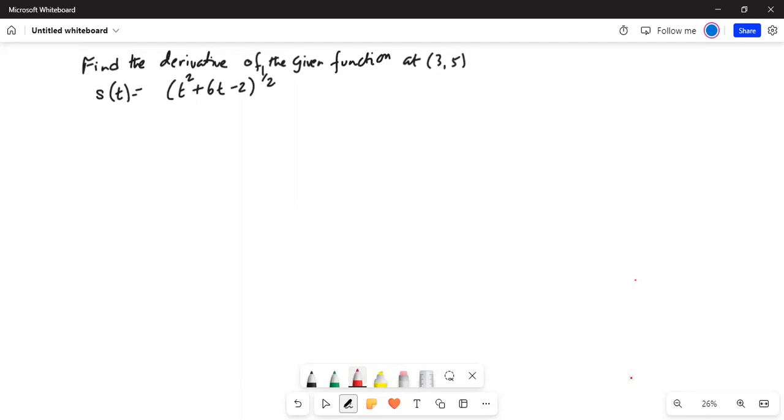The problem says find the derivative of the given function at the point (3,5). That means your y coordinate is 5, your x coordinate is 3. In this case, the t value will be 3 and s(t) value will be 5.